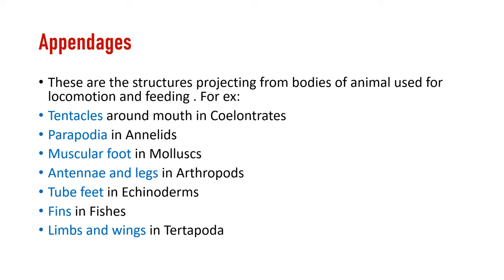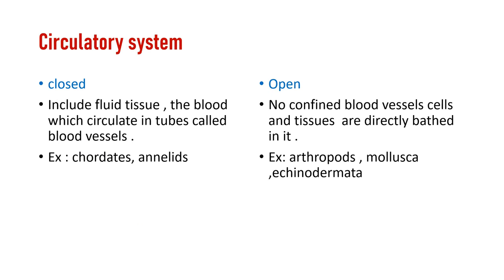We have the circulatory system, which is of two types: closed and open. In a closed system, blood circulates in tubes known as blood vessels — examples are chordates and annelids. In an open system, there are no confined blood vessels and tissue directly bathes in the fluid — present in arthropods, mollusca, and echinoderms.